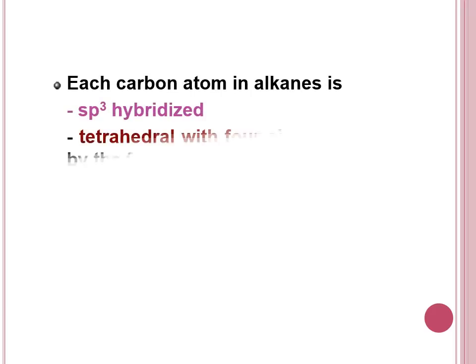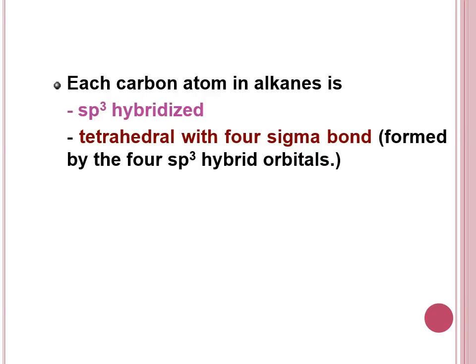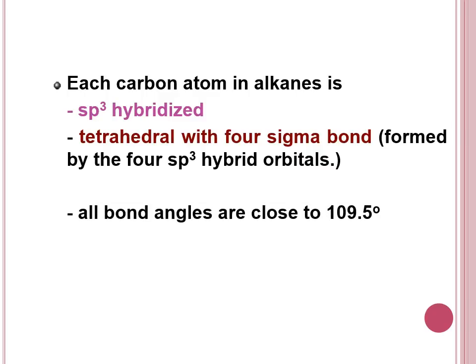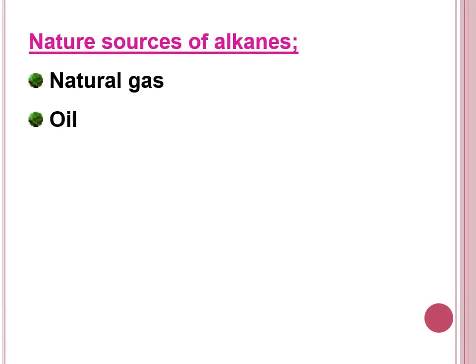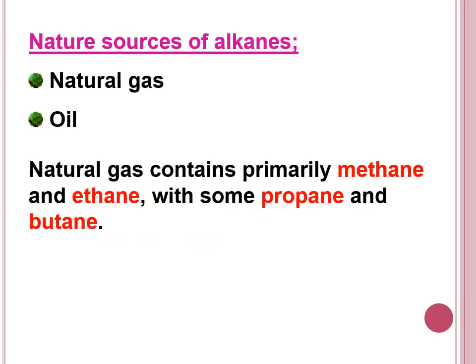In alkanes, each carbon atom is sp3 hybridized and forms a tetrahedral shape with four sigma bonds. The bond angles are 109.5°. IUPAC names have the '-ane' suffix as the parent. Natural gas contains methane, ethane, propane, and butane.